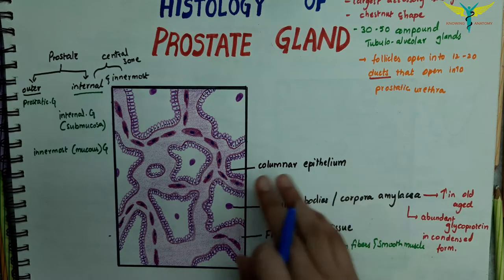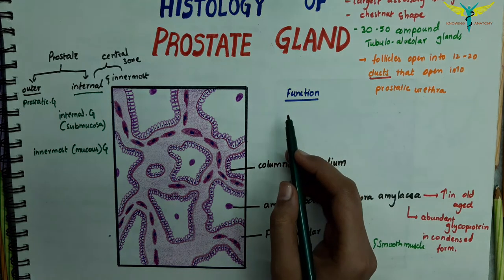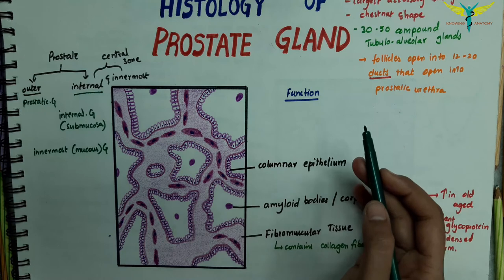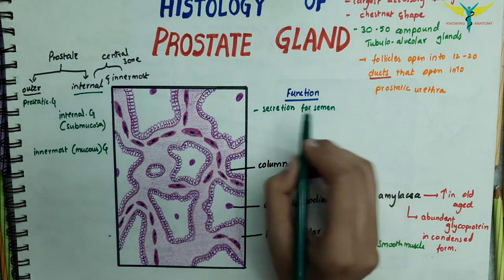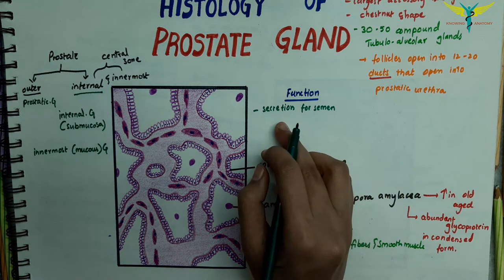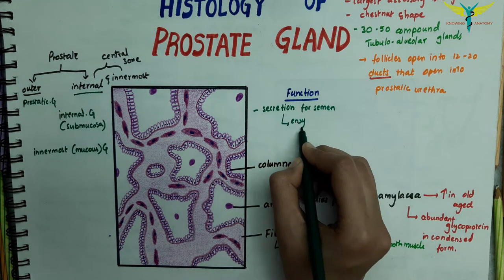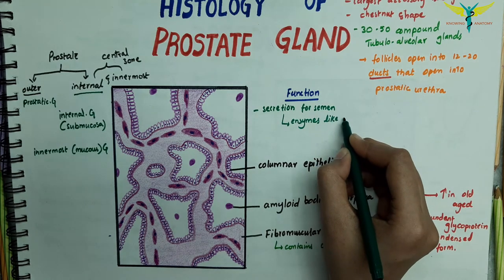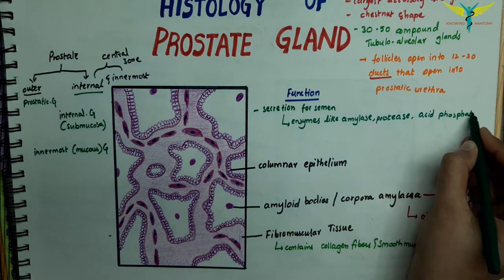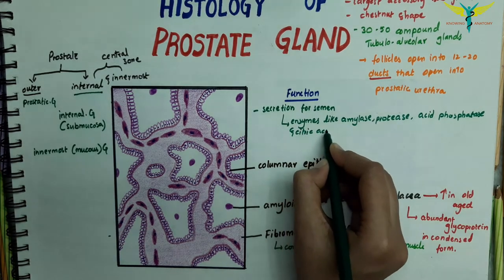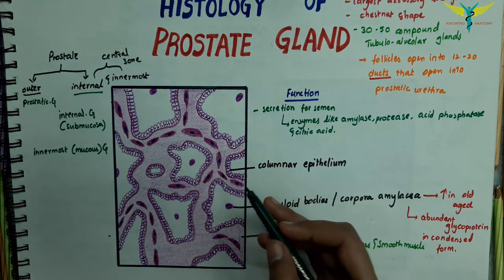The prostate produces secretions that form a considerable part of semen. This secretion is rich in enzymes like acid phosphatase, amylase, and protease, and in citric acid. The prostate also produces substances like prostaglandins that have numerous actions.